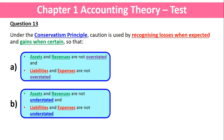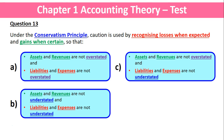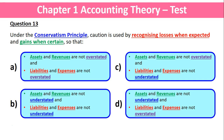Option b: assets and revenues are not understated, and liabilities and expenses are not understated. Option c: assets and revenues are not overstated, and liabilities and expenses are not understated.